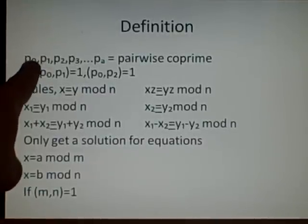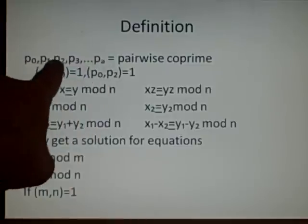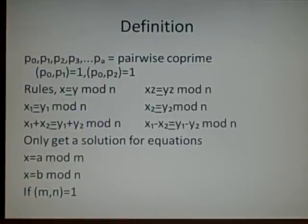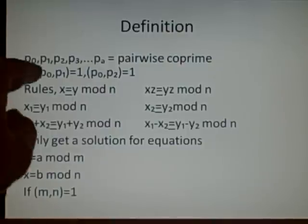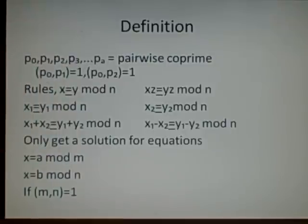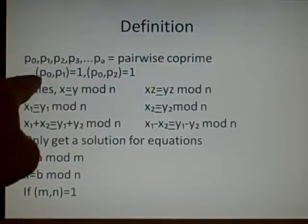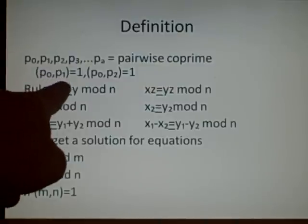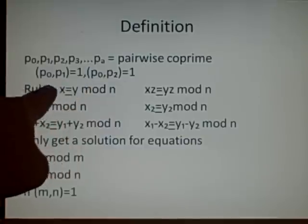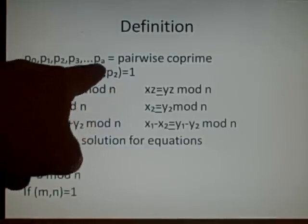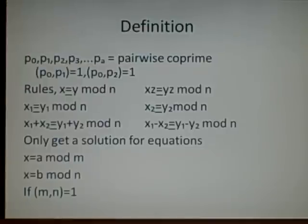these are all primes. So P0, P1, P2, and so on, they're all primes. And they're called pairwise coprime if each of them together are all primes. So there's no common factor between any of them. So the first one and the second one, highest common factor is 1. The first one and the third one, highest common factor is 1, and so on.